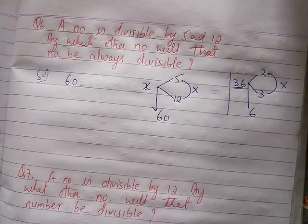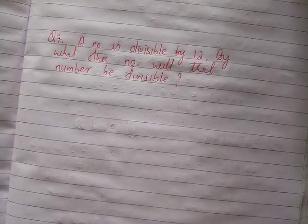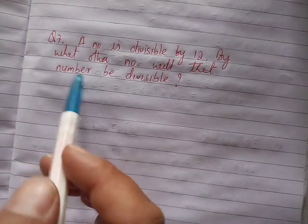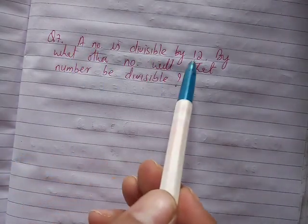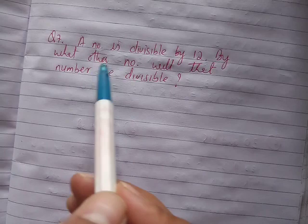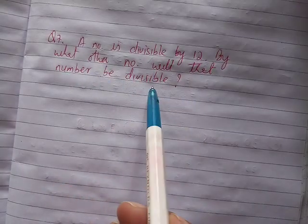The next question is number 7. A number is divisible by 12. By what other number will that number be divisible?